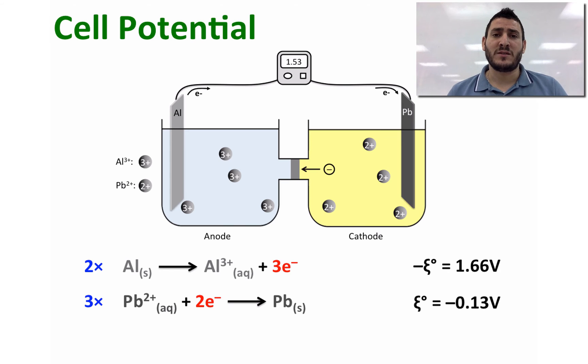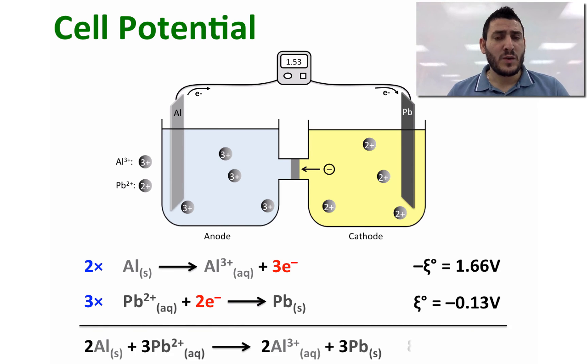A very important remark is that when you multiply the half equation by an integer, you do not touch the standard reduction potential. After that, when you find the redox reaction, you sum the two standard reduction potentials and therefore you get 1.53 V, which is the cell potential.